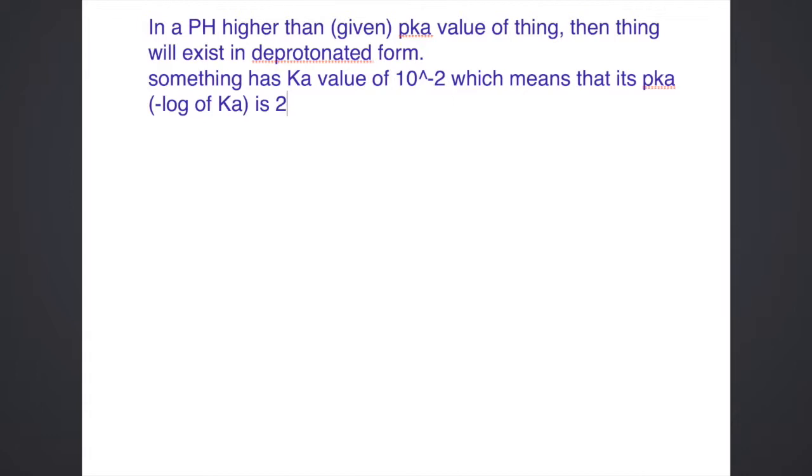Now, what does that mean? Let's really look back to the Ka value. Ka value, as we probably all know, is a ratio of the products to the reactants. And when talking about an acid, the products are usually the deprotonated form of the molecule. And we'll take an example.